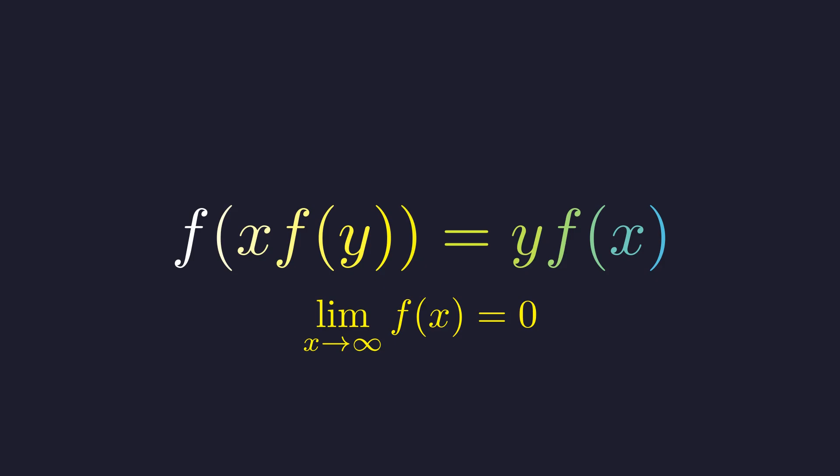We'll solve this step-by-step using strategic substitutions, and I'll also show you a completely different approach using monotonicity as a bonus at the end. Let's dive in and see what we can uncover. In functional equations like this one, strategic substitutions are your best friend. Let's start with the simplest positive real number we can think of, 1.